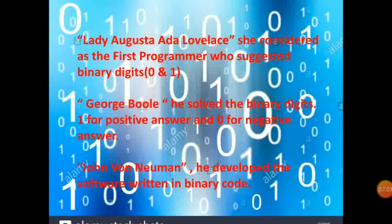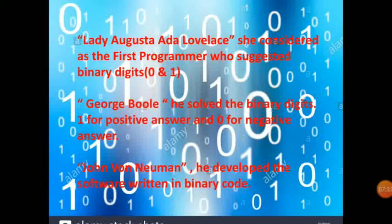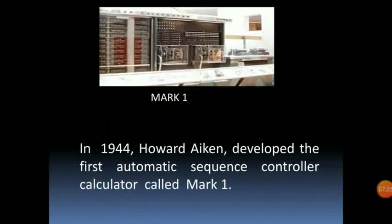Next is Lady Augusta Ada Lovelace, who is considered the first programmer. She suggested binary digits — zero and one. Next is George Boole, who solved binary digits: one for a positive answer and zero for a negative answer. Next is John Von Neumann, who developed software written in binary code. In 1944, Howard Aiken developed the first automatic sequence-controlled calculator called Mark I.